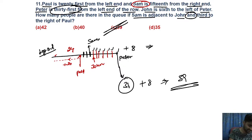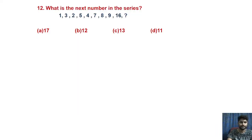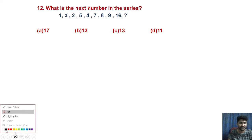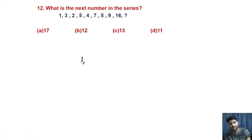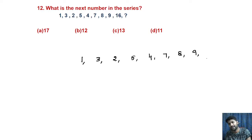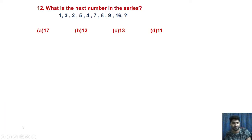This is the most important statement — if you understand the arrangement you can choose the answer of 39. Now there is a number series question: 1, 3, 2, 5, 4, 7, 8, 9, 16. What is the answer? This is an interesting question.